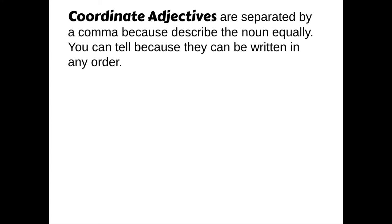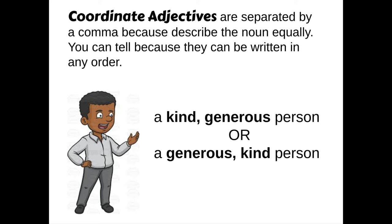Now today, we're going to talk about coordinate adjectives. Coordinate adjectives are adjectives that are separated by a comma because they describe the noun equally. You can tell if they're describing the noun equally because the adjectives can be written in any order. For instance, if you heard the sentence, 'The man was a kind, generous person,' I could swap the order and say 'the man was a generous, kind person.' It doesn't matter which order those two adjectives are written in because they're describing the person equally. One adjective is not more important than the other.